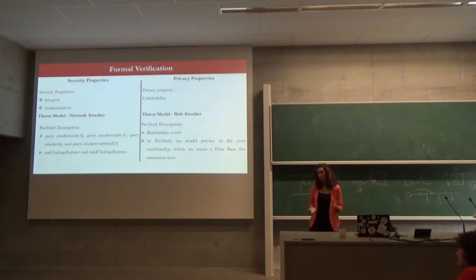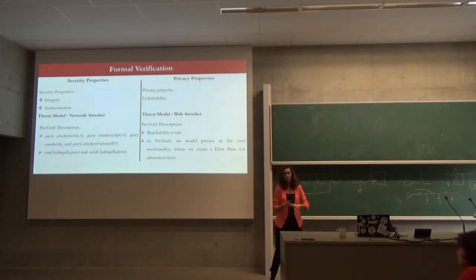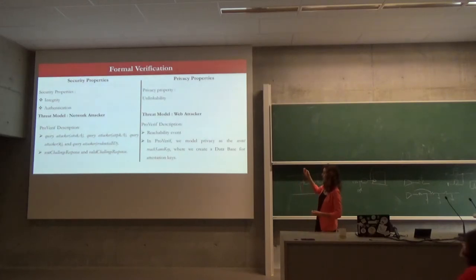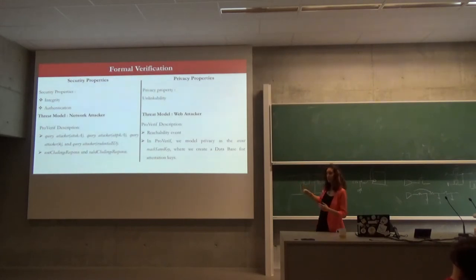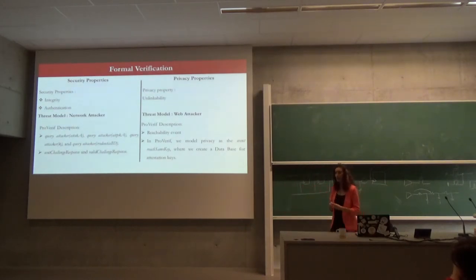For the privacy property, we had to decide what privacy means in our model. We chose to work on unlinkability, because the protocol uses different pairs of keys for each relying party, meaning your accounts cannot be linked. Our threat model here is a web attacker who sees the messages received and tries to link users. We use reachability events to check if the attacker, having information from the web, can link two accounts.